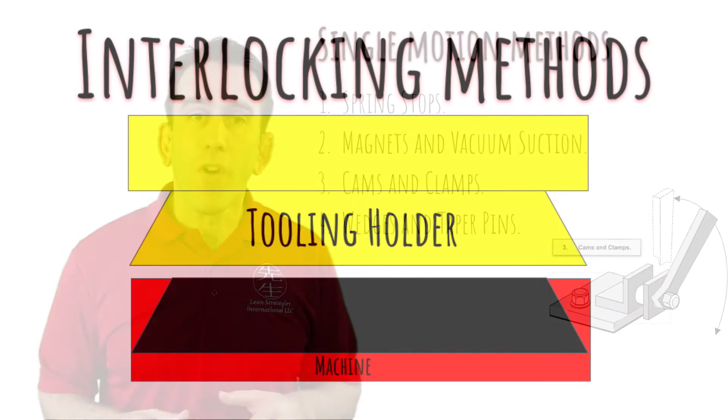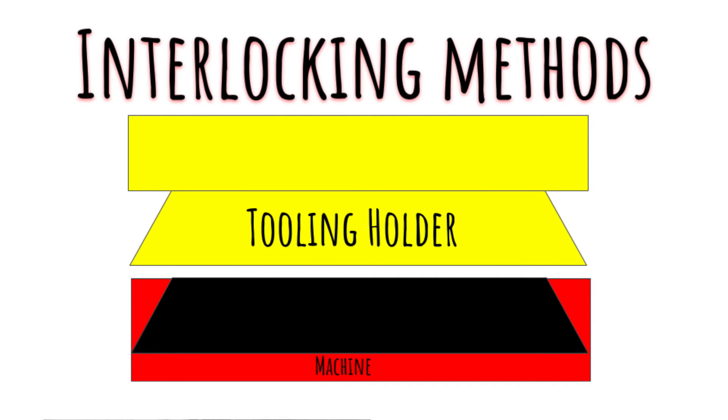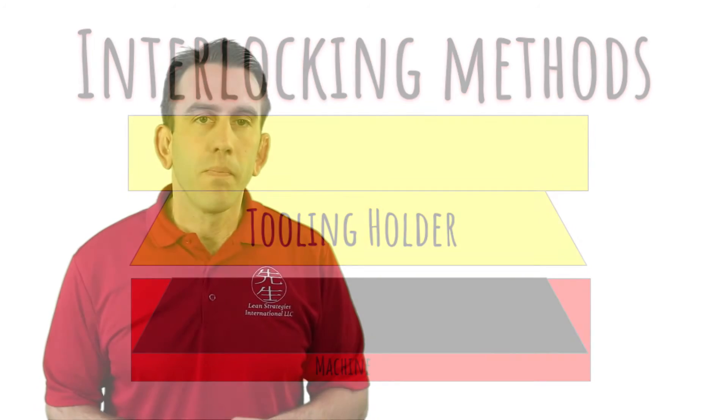The final functional clamping method is the interlocking devices. These items generally slide into place to secure items. As you can tell, these three options are great alternatives to the long process of finding nuts and bolts, acquiring tools, and laboriously securing them during internal activities.